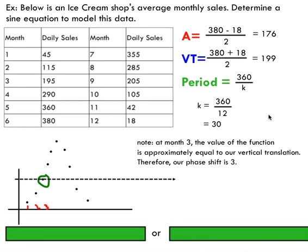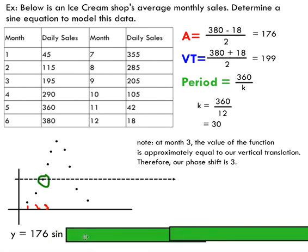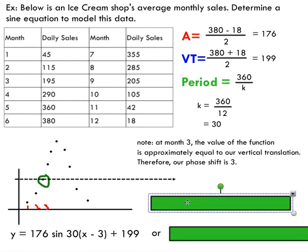We're going to say that this could be considered a phase shift of three units - month one, month two, month three, three units to the right. This helps us model this as a sine graph, because we know that sine usually starts at zero or at the vertical translation. So putting all of this together, we could model this as a sine function. Our amplitude is 176, we're working with sine, we've got our K value of 30, we're shifting to the right by three, and we're shifting up by 199.